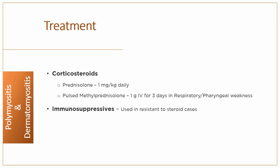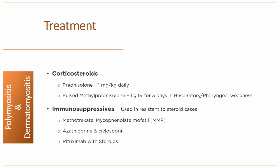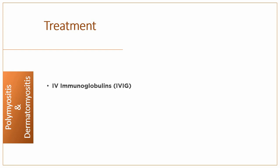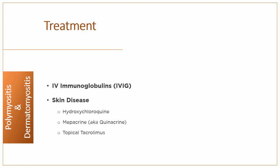Although most patients respond well to glucocorticoids, many need additional immunosuppressive therapy, which should be used early in resistant cases. Methotrexate and mycophenolate mofetil are the first choices for many, but azathioprine and cyclosporine are also used as alternatives. In clinical practice, rituximab is an option for use with glucocorticoids to maintain early glucocorticoid-induced remission. Intravenous immunoglobulin may be effective in refractory cases. Hydroxychloroquine, mepacrine and topical tacrolimus are used for skin disease.